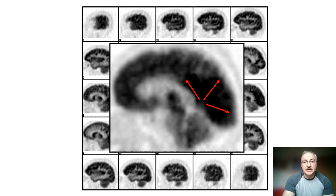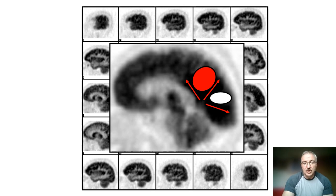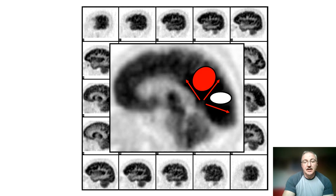If one region is more intense than the others, it should be the calcarine sulcus. Between the parieto-occipital sulcus and the calcarine sulcus, we have the cuneus and therefore the precuneus — an important region. This should be more intense than the medial aspect of the cerebral hemisphere just at the level of the sulcus of Rolando. So important regions to know are the precuneus and the posterior cingulate gyrus.